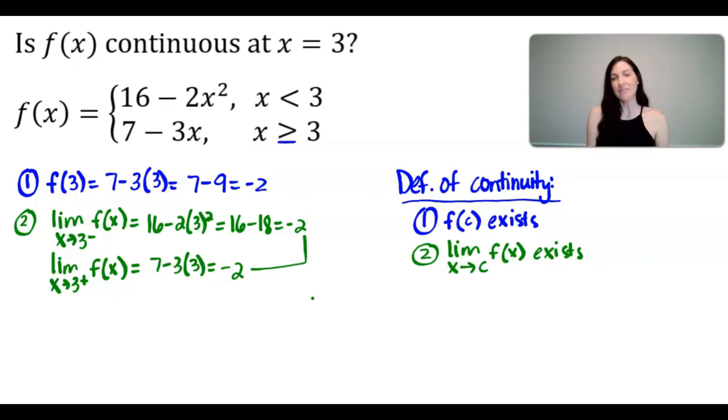And because the limit from the left-hand side and the right-hand sides are equal, therefore the limit as x approaches 3 of f of x is equal to negative 2.